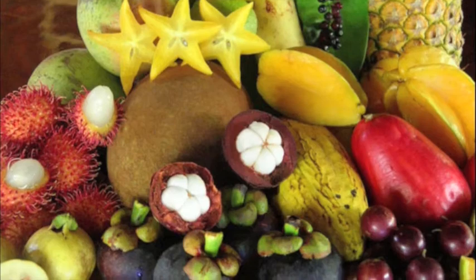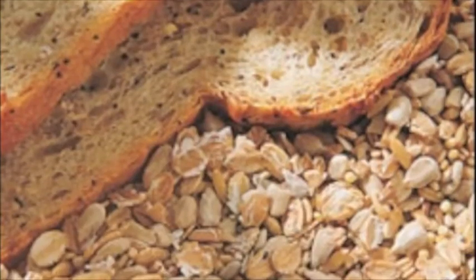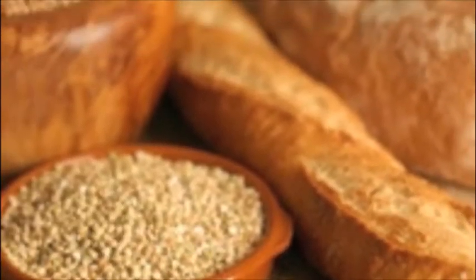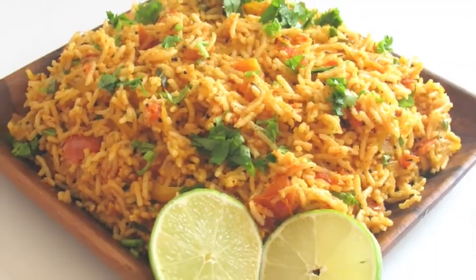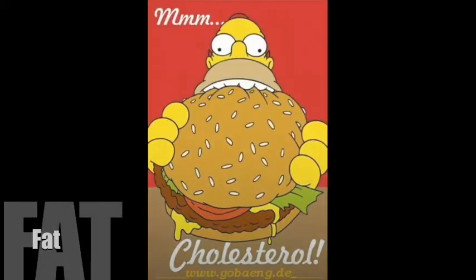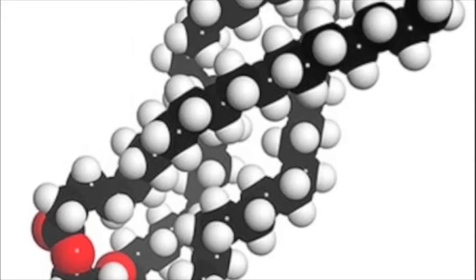Simple carbohydrates are absorbed quickly and raise blood sugar levels more rapidly. Rapid absorption increases the chances of sugar converting to fat. Complex carbohydrates take longer to digest and be absorbed. Examples of complex carbohydrates are grains and potatoes. Lack of carbohydrates raises the chances of developing kidney stones.